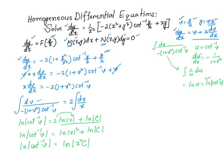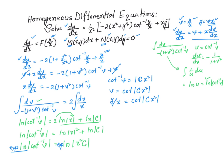Applying exponential to both sides, the ln and exponential cancel, leaving cotangent inverse of v equals |C|·x². Applying cotangent to both sides gives v = cotangent(|C|x²). Since v = y/x, we get y/x = cotangent(|C|x²), so the final solution is y(x) = x·cotangent(Cx²).